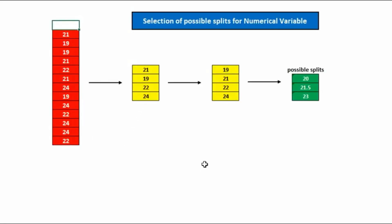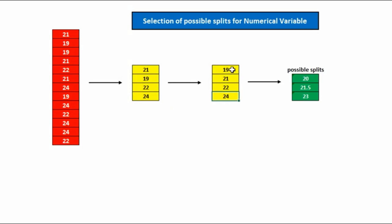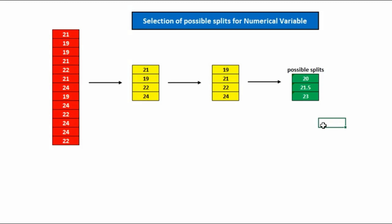Here is a process for selecting possible splits for a numerical variable. We take all temperature values, find the unique numbers — like 21, 19, 22, and 24 — then sort them in increasing order: 19, 21, 22, 24. Then we find the average of each pair of consecutive numbers: 19 and 21 gives 20, 21 and 22 gives 21.5, and 22 and 24 gives 23. So these averages — 20, 21.5, and 23 — are our possible splits on the numerical variable.